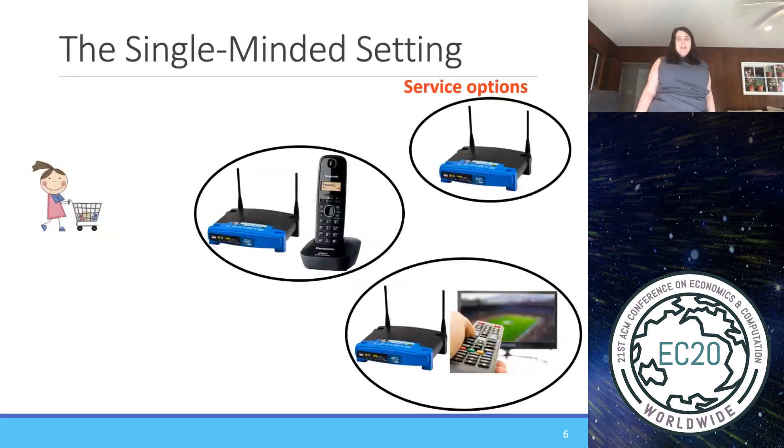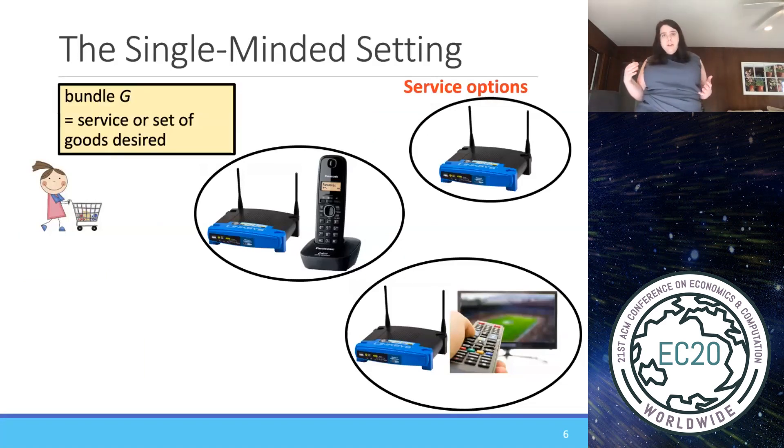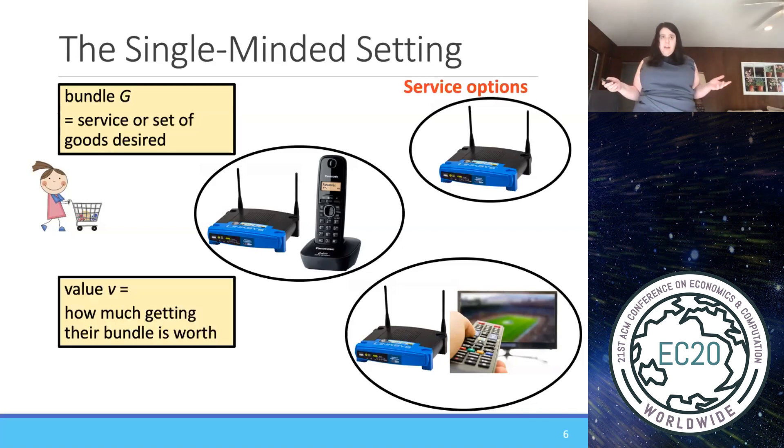So what is the single-minded setting? The single-minded setting is where a buyer has some bundle that they want. It could be Wi-Fi or Wi-Fi plus phone or Wi-Fi plus TV, but they want some specific bundle, and they're happy as long as they get some set that contains that bundle, and they're unhappy if they don't. And they have a value for how much getting that bundle is worth to them. So for example, if somebody wants Wi-Fi, they're happy and they get their value as long as they get Wi-Fi. So getting phone is worth no extra to them. They just want Wi-Fi. So Wi-Fi and phone is worth just the same. Wi-Fi and TV is worth just the same. However, if they want Wi-Fi and phone, they're only happy here getting Wi-Fi and phone because Wi-Fi and TV does not contain Wi-Fi and phone.